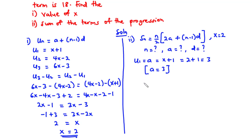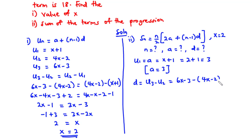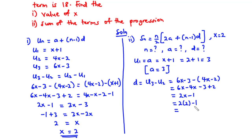To find the common difference D, we use u3 minus u2, which is (6x minus 3) minus (4x minus 2) equals 2x minus 1. Substituting x equals 2: D equals 2 times 2 minus 1, which is 4 minus 1 equals 3. So the common difference D is 3.